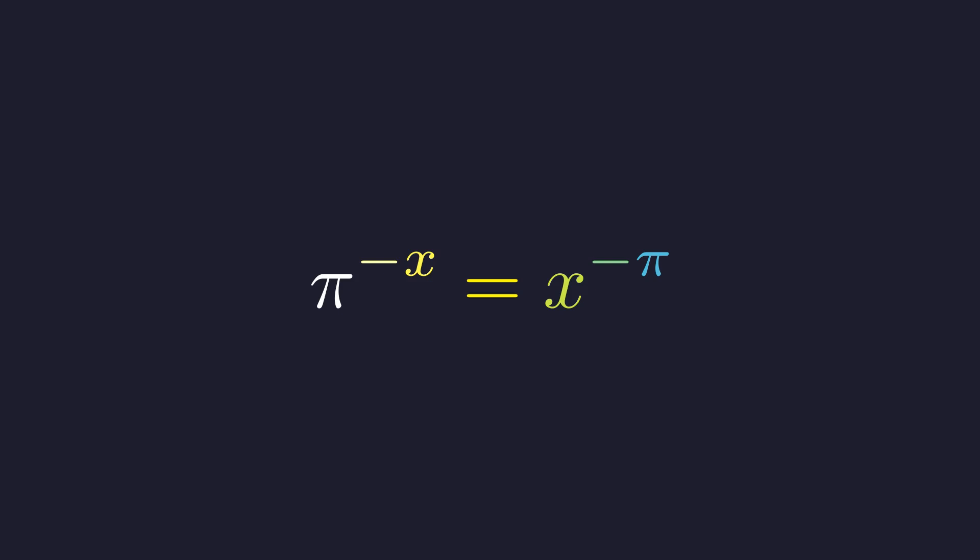Let's start by rewriting this into a cleaner form. Remember what negative exponents mean: when you see a negative exponent, it's telling you to take the reciprocal. So π to the negative x becomes 1 over π to the x, and x to the negative π becomes 1 over x to the π. Now we can see the structure more clearly. When both sides are fractions with one on top, we can flip them both.